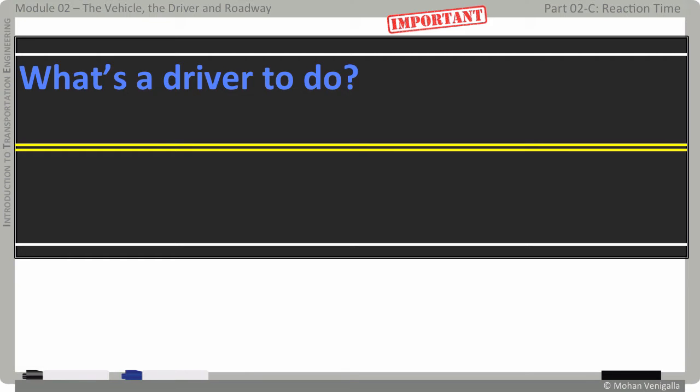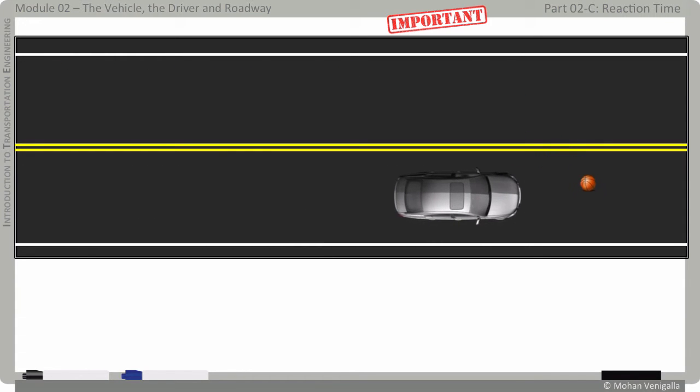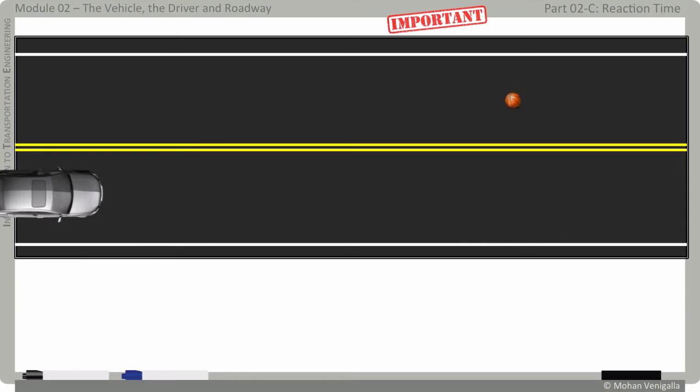What does Bob do then? He does what any of us would do. He stops the car suddenly. It's not the ball Bob is worried about. Bob is worried that a child might come after the ball and onto the road. The engineer's question would be, does Bob have adequate time to stop? More importantly, how much distance Bob has in front of him to stop before he hits the ball or, God forbid, hits the child? Let's reconstruct this event in a little bit more detail.